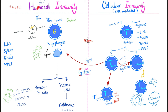Humoral immunity — why is it called humoral? Because we are secreting antibodies into bodily fluids, such as the serum and mucous membranes. B-lymphocytes are made and mature in the bone marrow — that's why we call them B. After the primary response, they start to mature into memory B-cells, so the second response is stronger and faster, or into plasma cells, which secrete antibodies into bodily fluids.